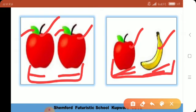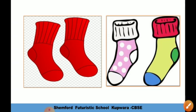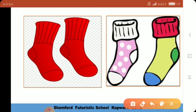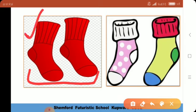آپ لوگ socks لگاتے ہو نا — we are having socks here, these are two socks. دونوں کا color کیا ہے؟ Red ہے — دونوں کا color red ہے، ایک جیسے ہیں۔ Color بھی ایک ہی ہے اور size بھی اتنا ہی ہے دونوں کا، so they are same.